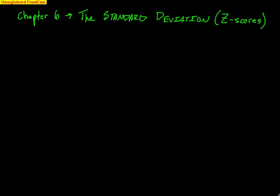All right, AP Statistics. Let's take a look at Chapter 6. This video is going to cover several things. It's going to repeat a little bit in the beginning, then we're going to end with some stuff that's kind of new and really essential to the entire class. The chapter is called The Standard Deviation as a Measuring Stick, focusing on Z-scores.